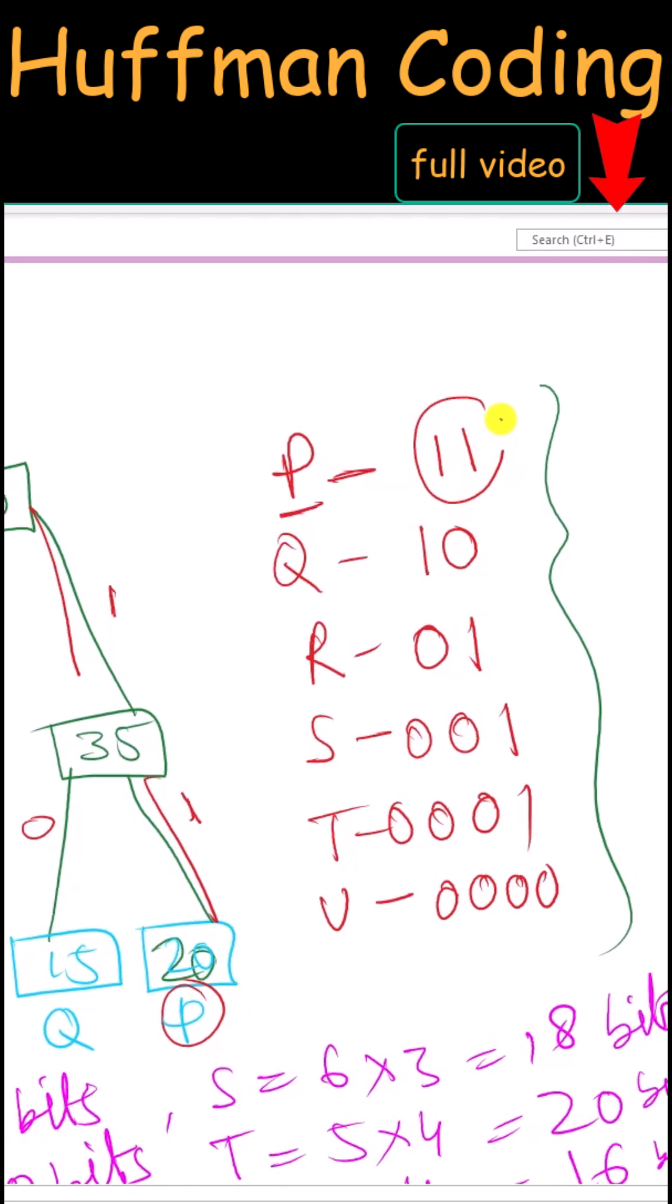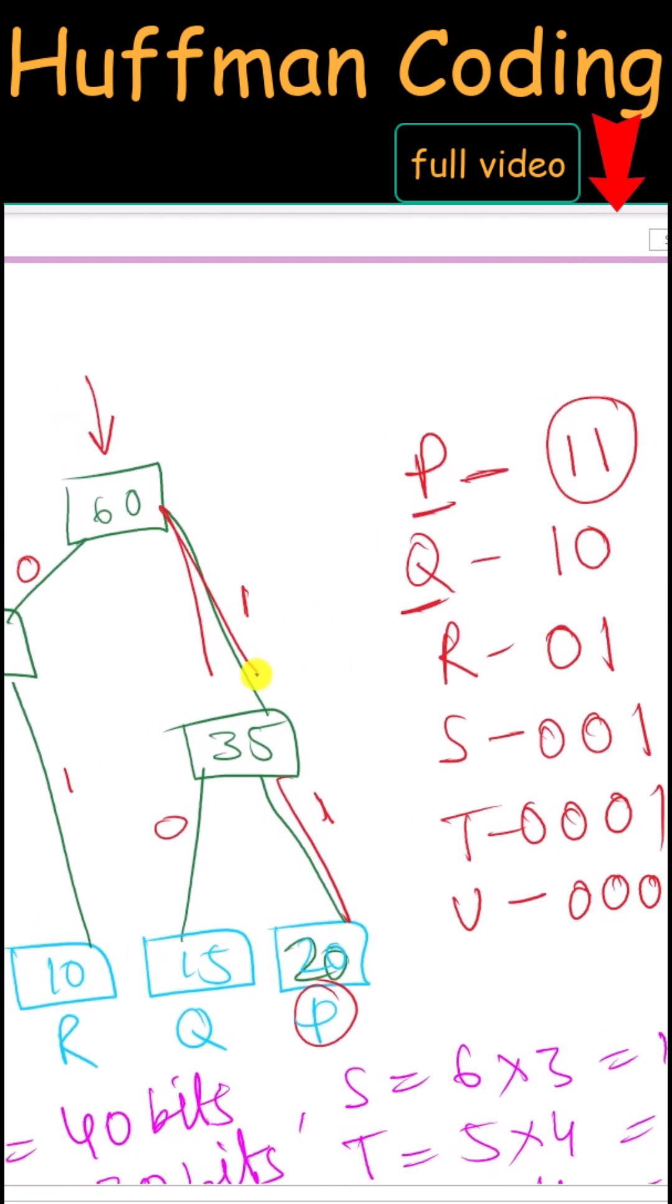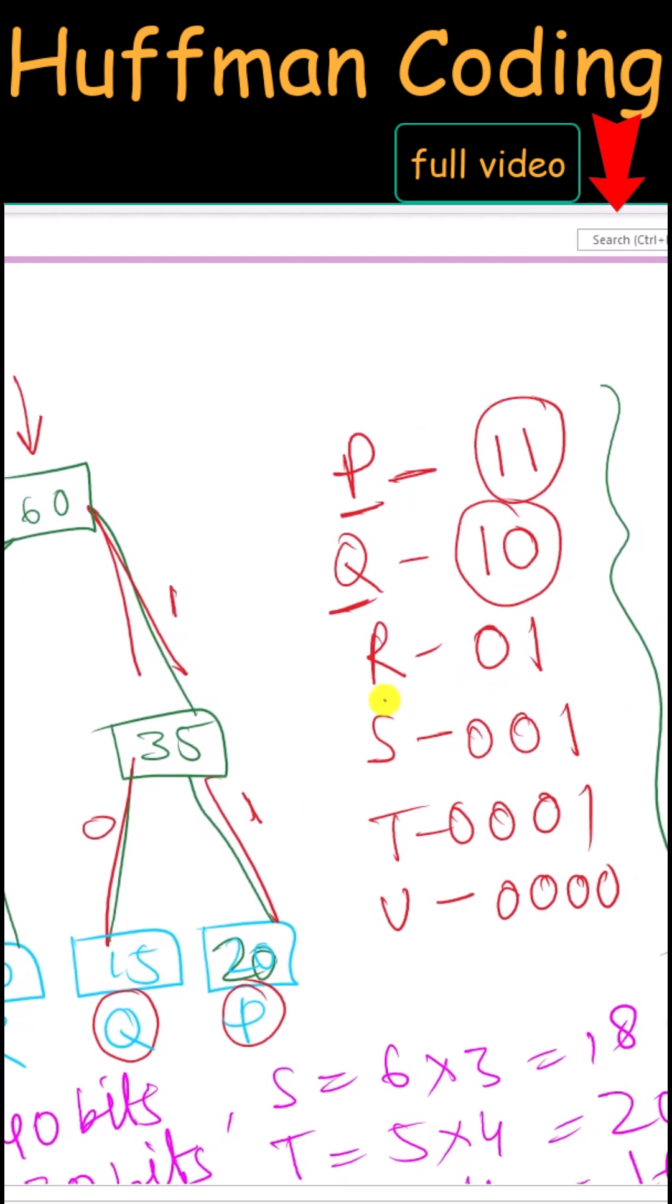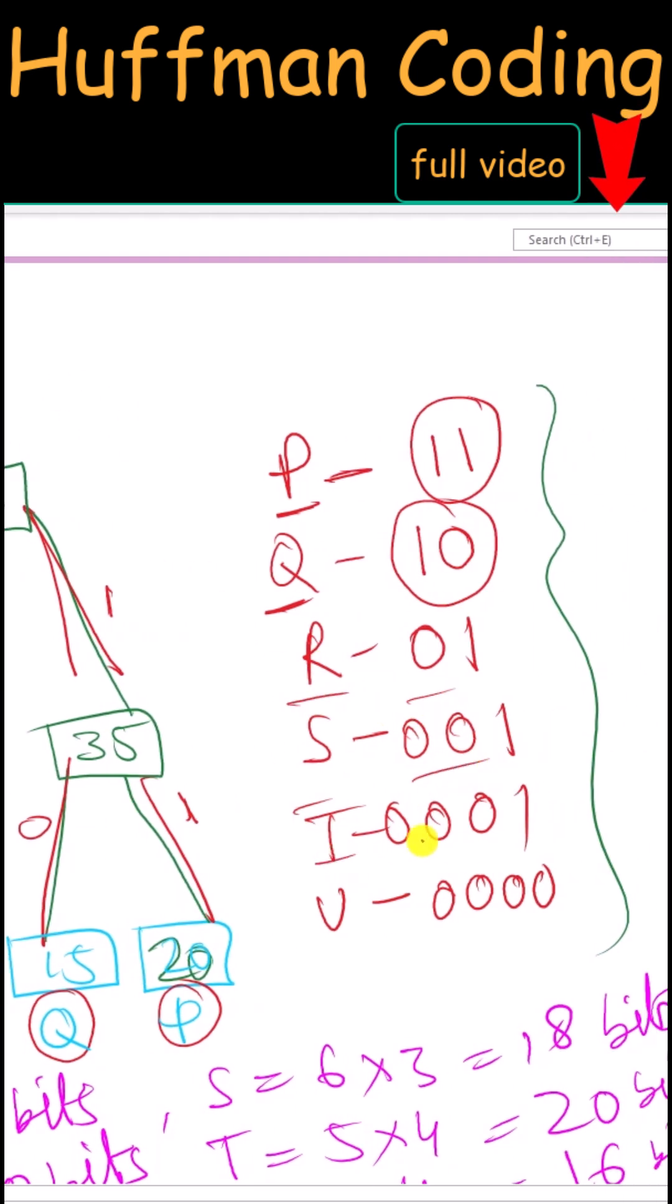So here we have the code 11. Similarly for Q we have 1 and 0, so here we have 10. Similarly, we can represent all of the other characters in our message.